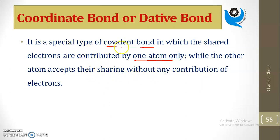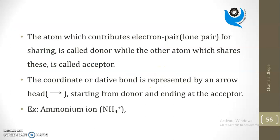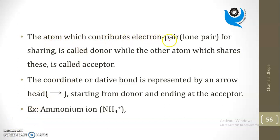To repeat: a covalent bond involves mutual sharing, whereas in a coordinate bond — also called a dative bond — one atom shares both electrons while the other atom accepts them without contribution. The atom that contributes the electron pair is said to donate a lone pair.